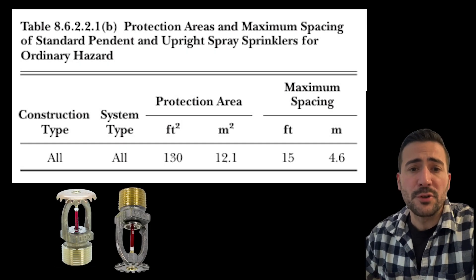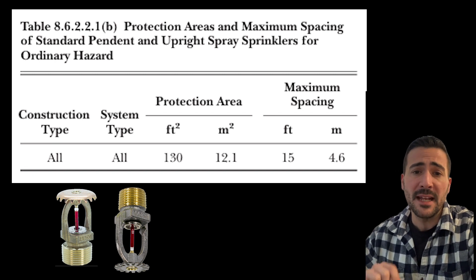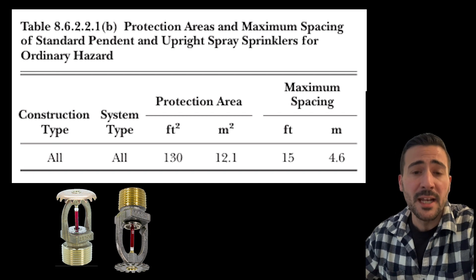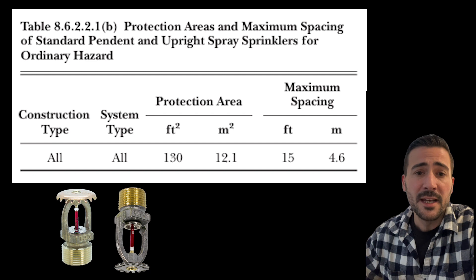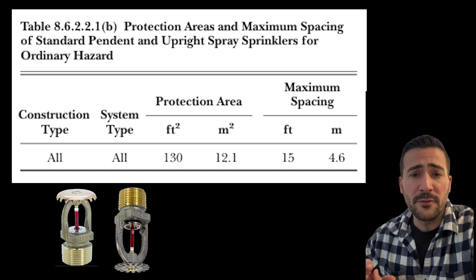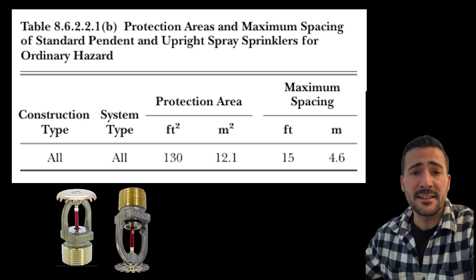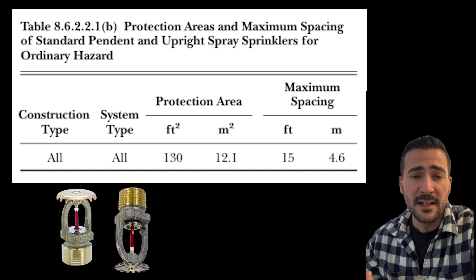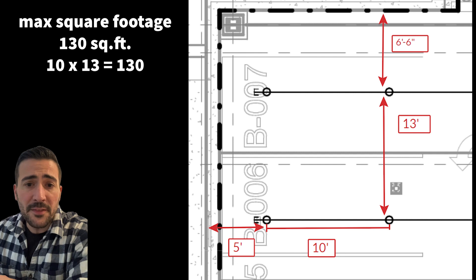Let's start off by going over our maximum protection area of coverage. NFPA 13 made tables for each style head that can be used in ordinary hazard occupancy. These tables give us our maximum square footage and our max distancing for heads. Let's start off by going over the most commonly used head: the standard spray upright and pendant.